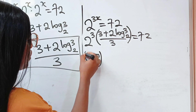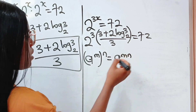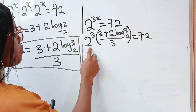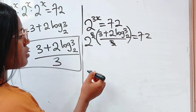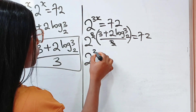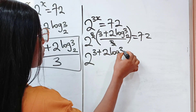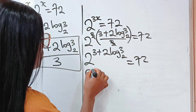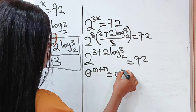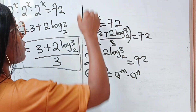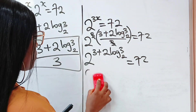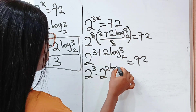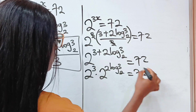Now, a to the power of m raised to the power of n is equal to a to the power of m times n. So we can write this as the 3 multiplying into the bracket — when that happens, the 3 will divide itself, and we have 2 to the power of 3 plus 2 log 3 base 2 is equal to 72. Now, when you have a to the power of m plus n, this equals a to the power of m multiplied by a to the power of n. So we rewrite this as 2 to the power of 3 multiplied by 2 to the power of 2 log 3 base 2, is equal to 72.